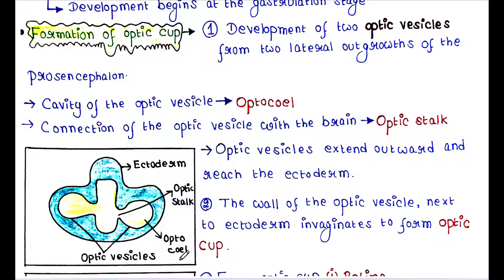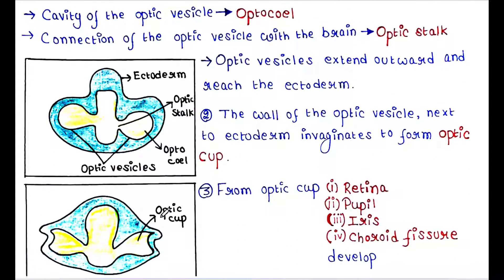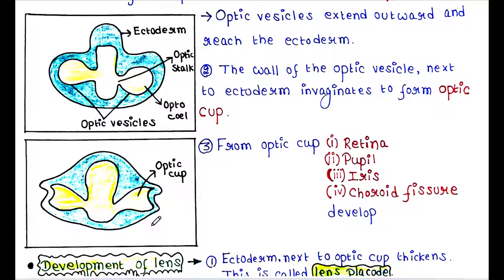The connection of the optic vesicle with the brain is called the optic stalk. The optic vesicles extend outward and reach the ectoderm, and the wall of the optic vesicle next to the ectoderm invaginates to form the optic cup.